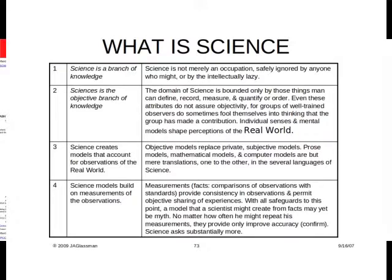So a little summary. Science is a branch of knowledge. It's the objective branch of knowledge. It is shared, ultimately. One of the criteria of a model is that it must meet all of the facts in its domain.